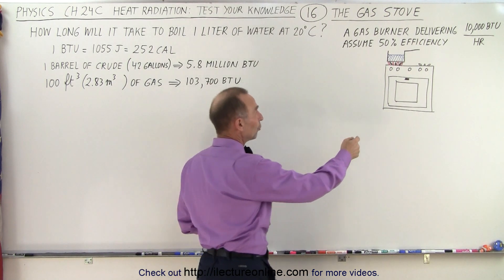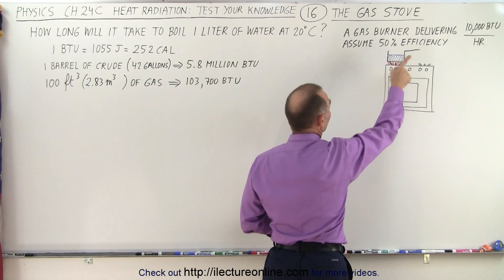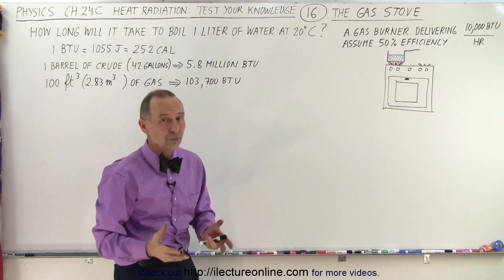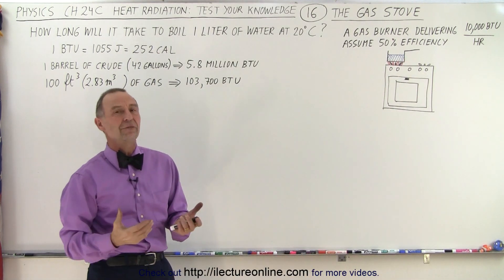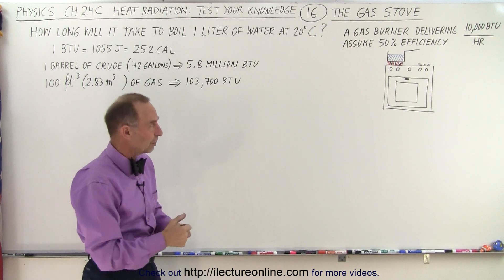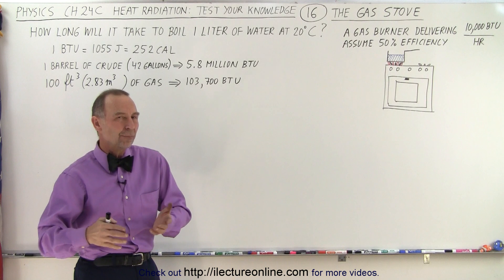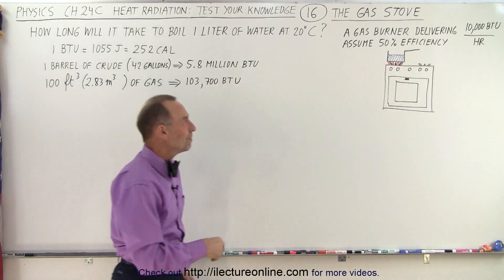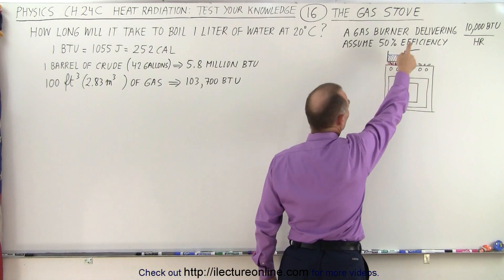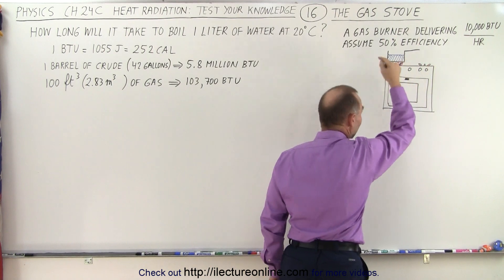So let's assume we have a gas stove that has burners that deliver as much as 10,000 BTUs per hour. That's kind of a typical value. Some do a little bit less, some do a little bit more, but let's take 10,000 BTUs per hour, and let's assume that it's about 50% efficient.